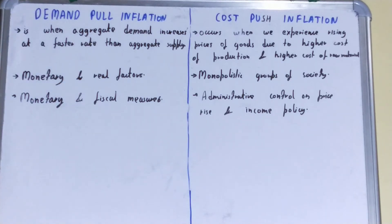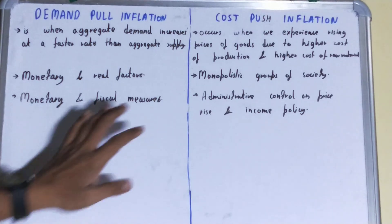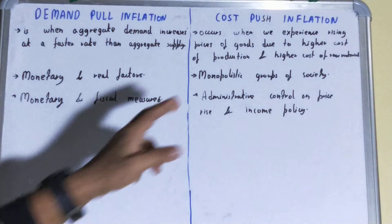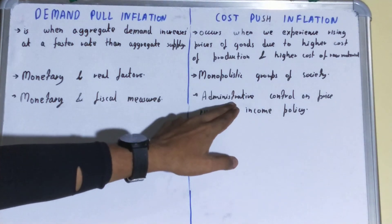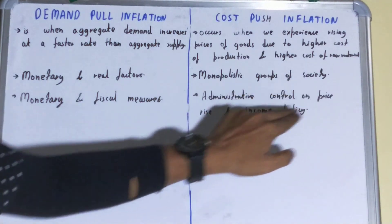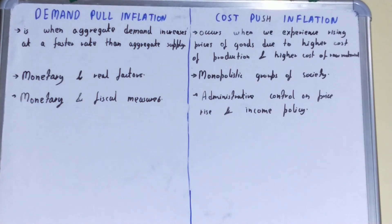Next, if you talk about policy recommendations, then in the case of demand-pull inflation, we can use monetary and fiscal measures to overcome this. But in the case of cost-push inflation, the measures we can take are administrative control on price rise, and income policy can be used to control cost-push inflation.